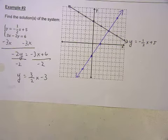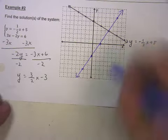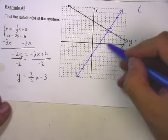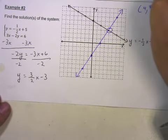So where's the solution? The solution is our intersection point. This point right here. The solution would be this ordered pair: one, two, three, four. Looks like it's 4, comma, 3.